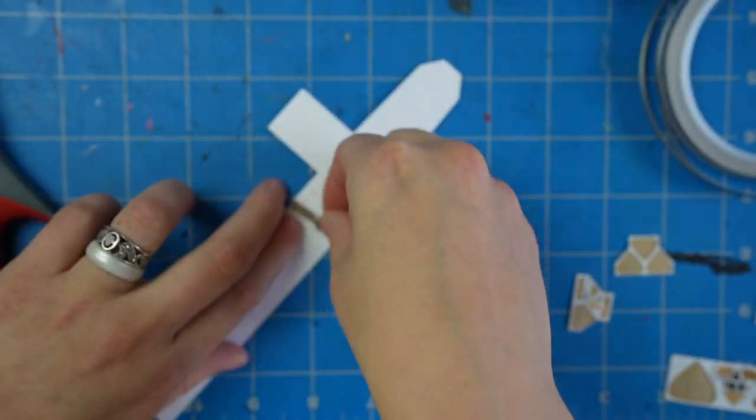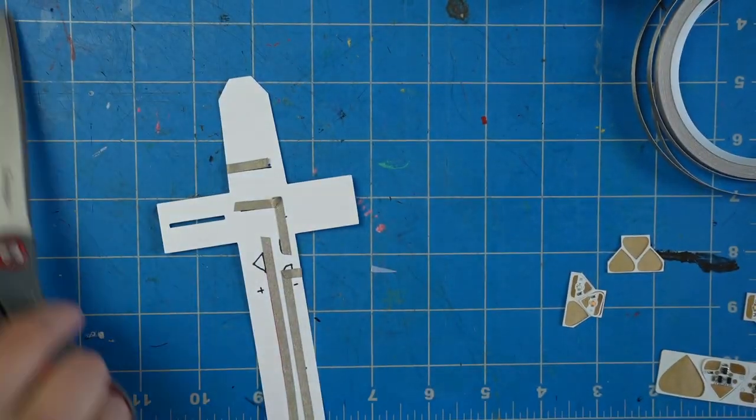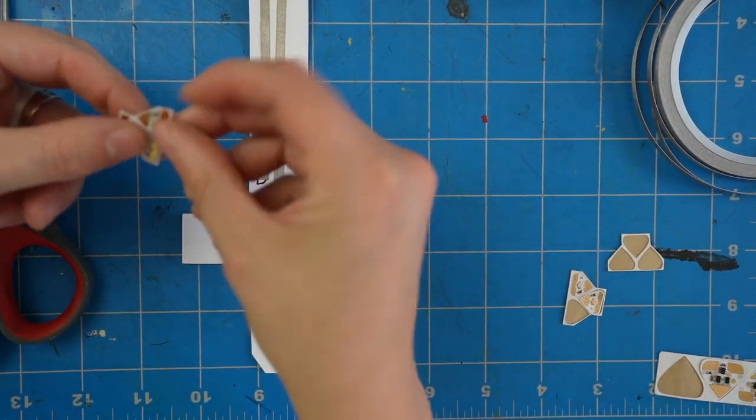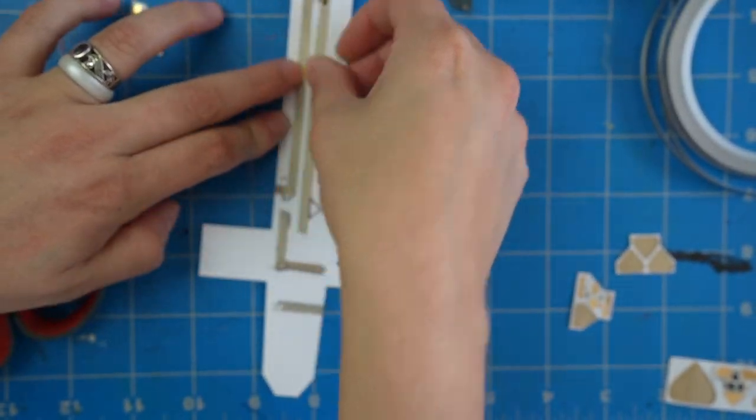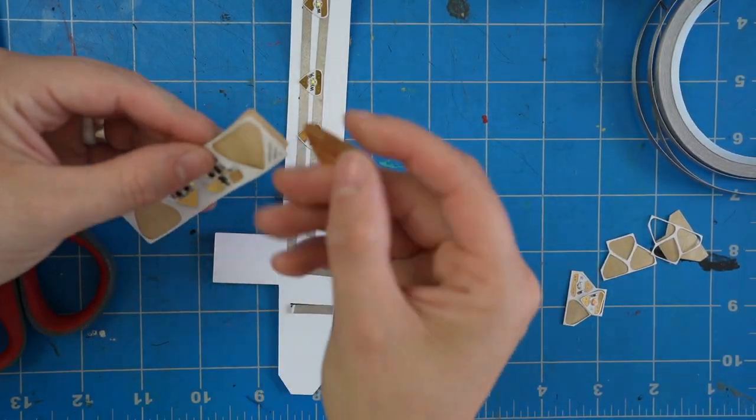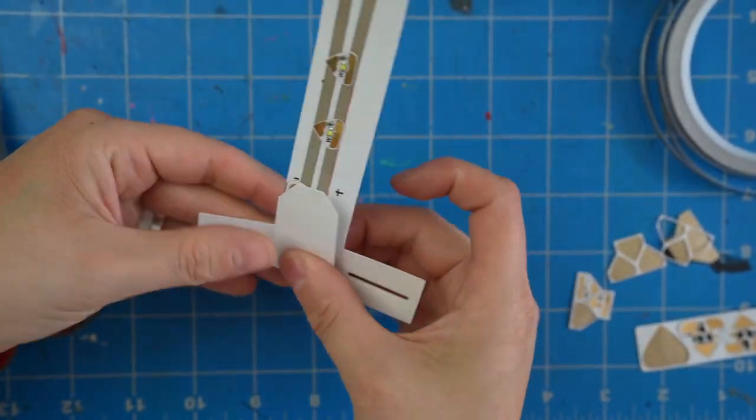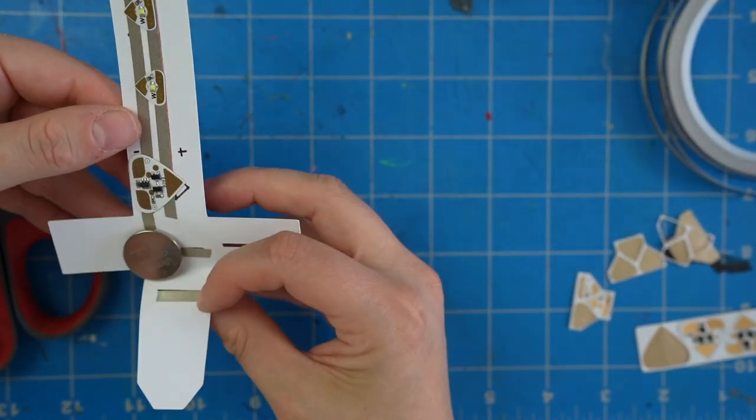I'll quickly repeat this process with another light strip and this one is designed to accommodate a Chibitronics circuit effects sticker so that you can create a light strip with some subtle lighting effects like blinking or fading. And same thing here I'll test the strip with a battery to make sure it works and then I'll put it to the side.